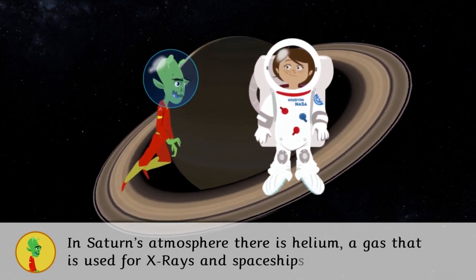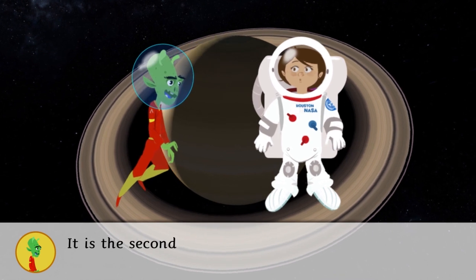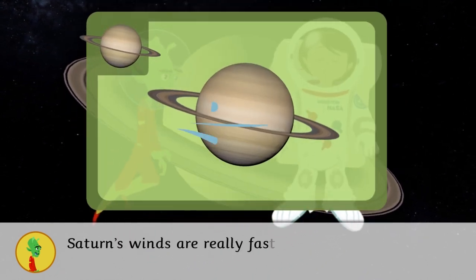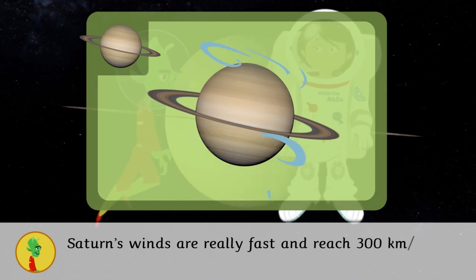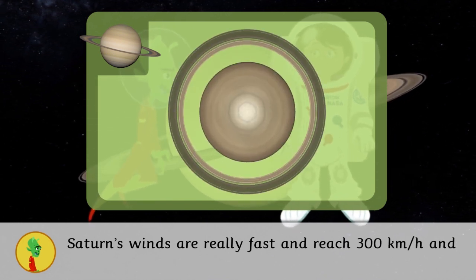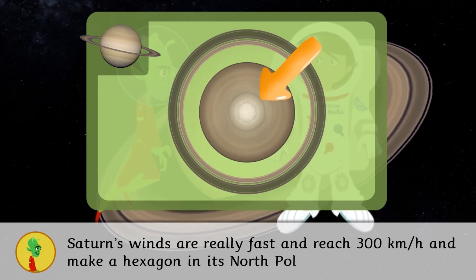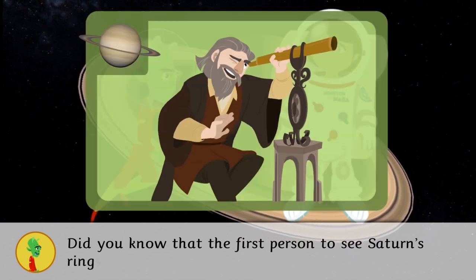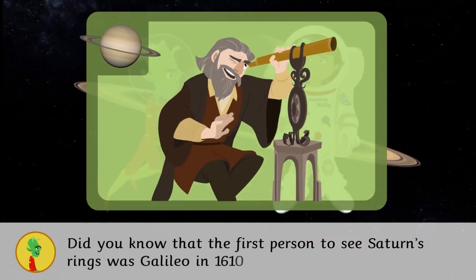It is the second biggest planet after Jupiter. Saturn's winds are really fast and reach 300 kilometers per hour and make a hexagon in its north pole. Did you know that the first person to see Saturn's rings was Galileo in 1610?